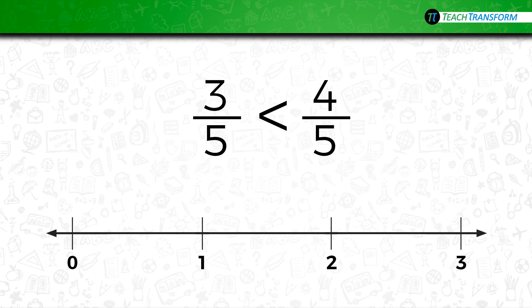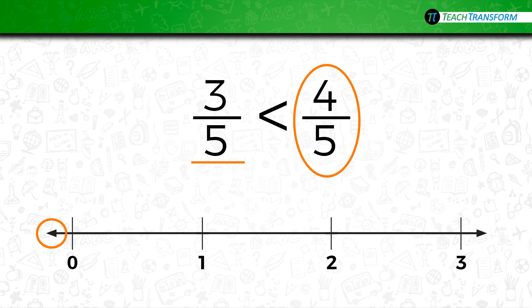Do you have trouble remembering which symbol to use — the greater than or less than symbol? Here's a trick. First, circle the largest fraction, then underline the smallest fraction. Now look at the left end of the number line. See the shape of the arrow? See how it matches the symbol that we wrote? You can use this symbol when the smallest number comes first in the comparison statement. Three-fifths is smaller than four-fifths, and three-fifths comes first, so use this symbol.